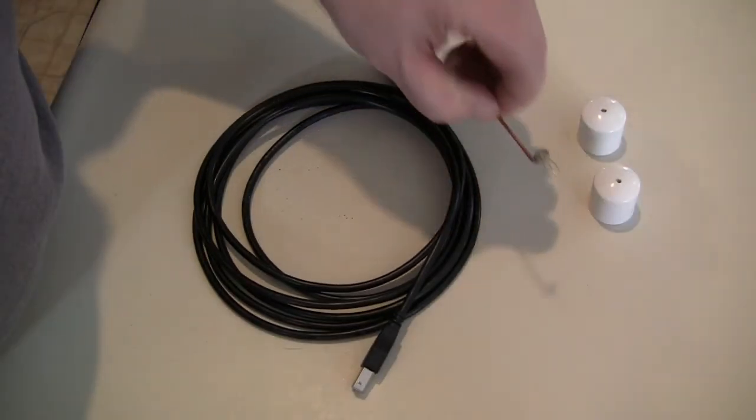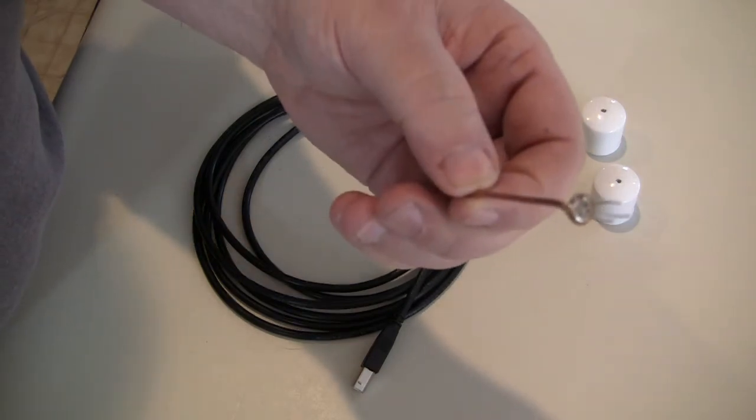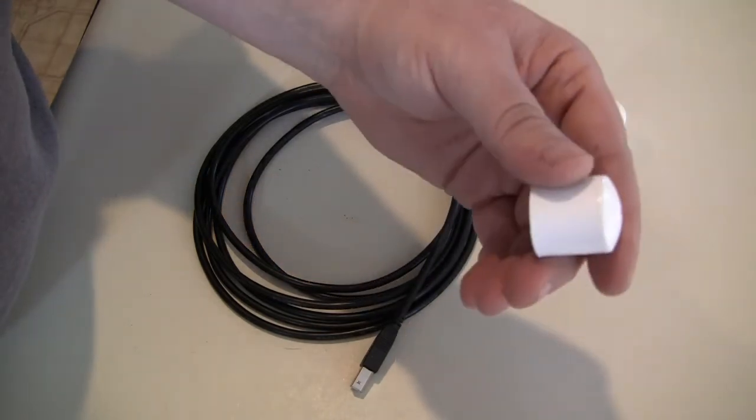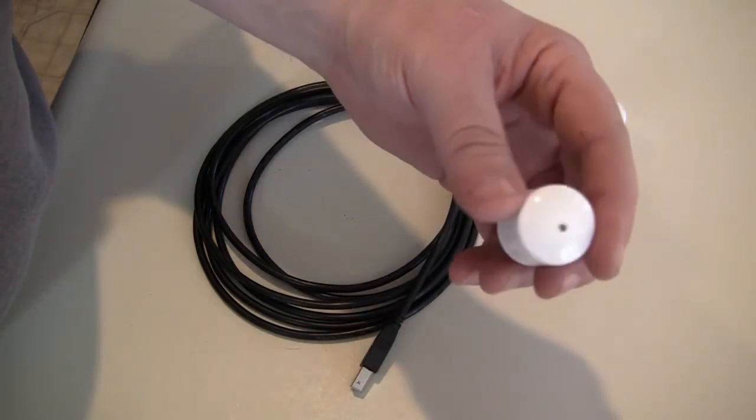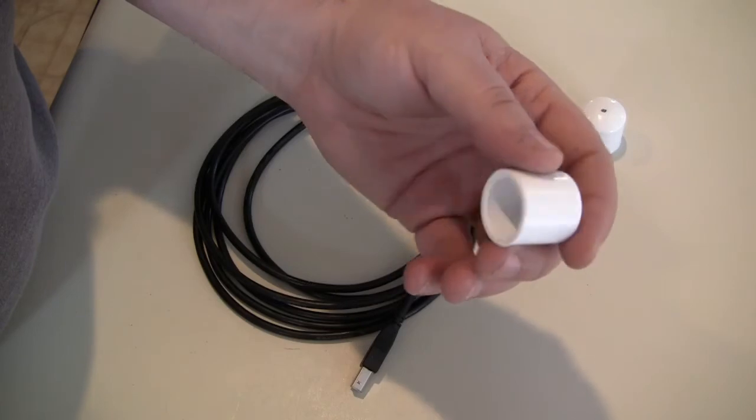This is the LM34 temperature sensor with a copper probe already soldered to it. And the housing is just two PVC caps, one inch in diameter. The hole in the cap is where the copper probe will come out. The PVC housing will encapsulate and seal the LM34 device and electrical connections from the underwater environment.